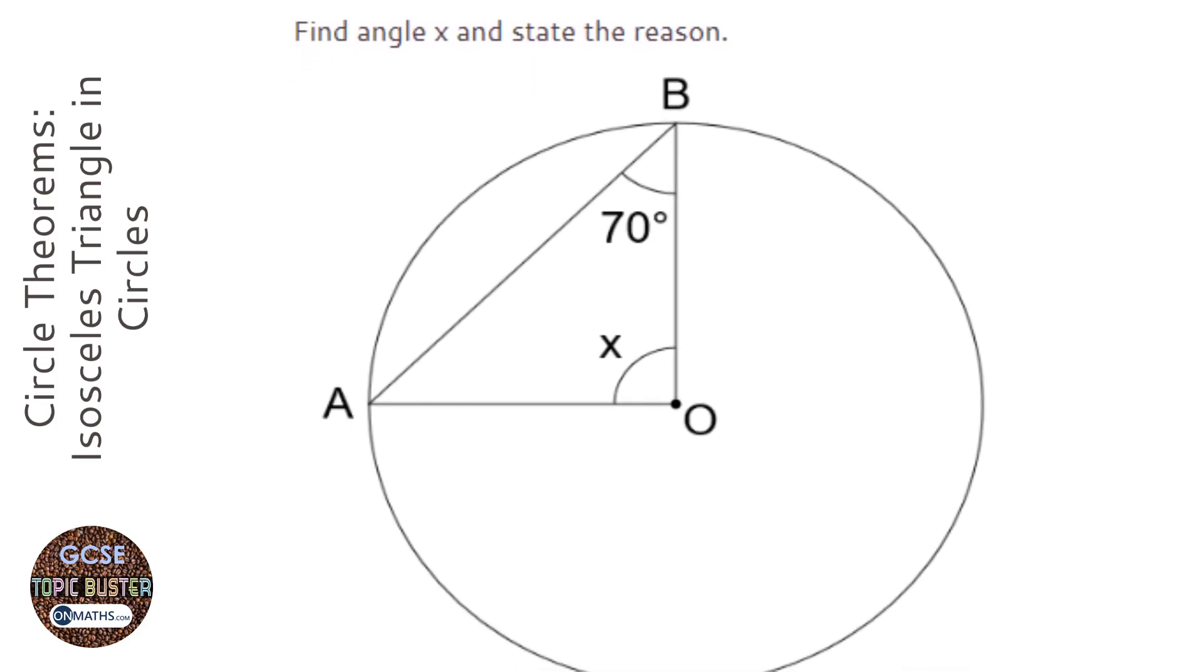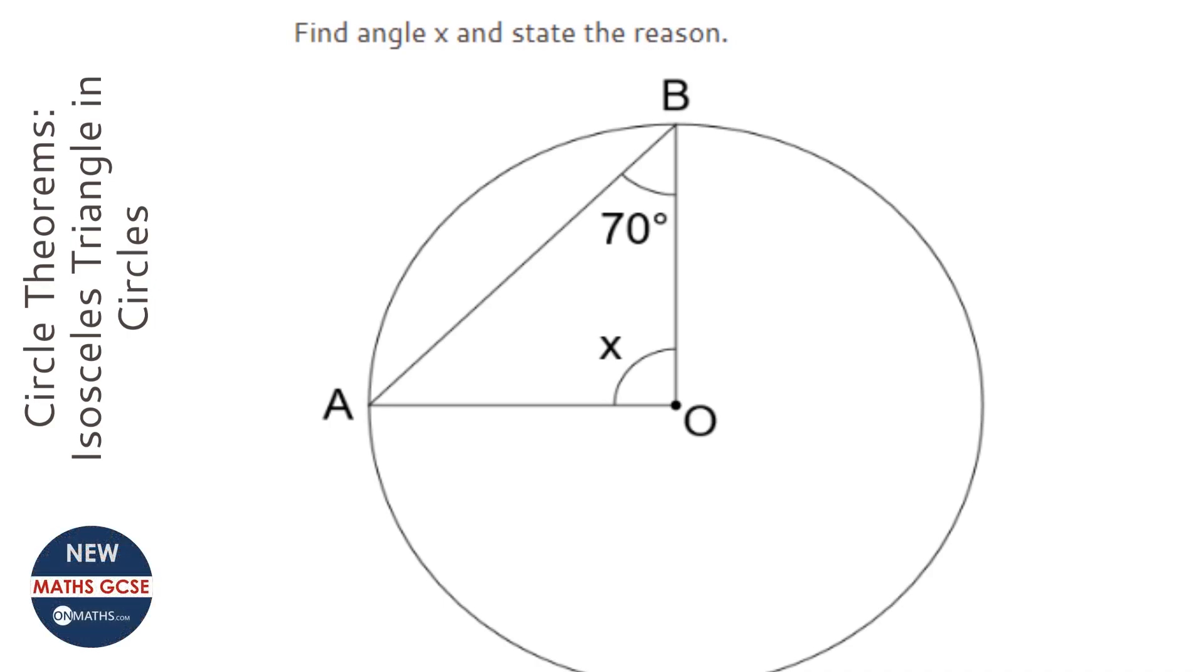Okay, so this question isn't actually a circle theorem, but it is one that we use with circle theorems all the time. It's important to spot that this is no ordinary triangle. This triangle is isosceles.